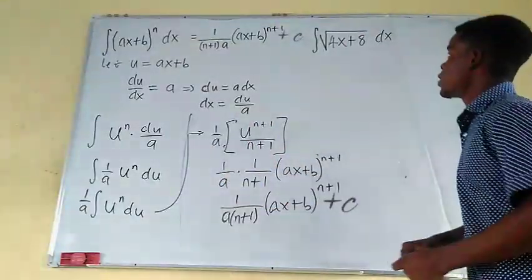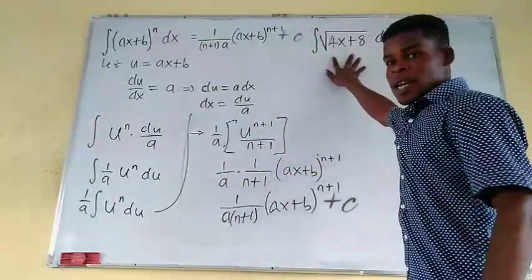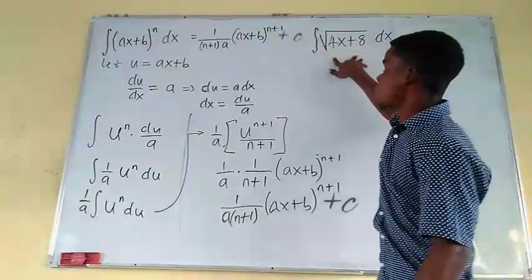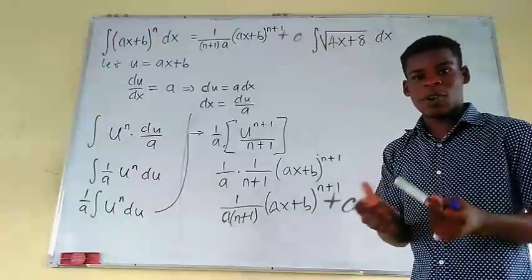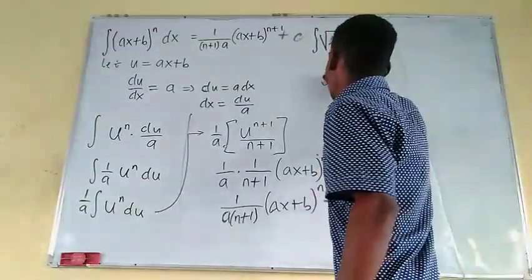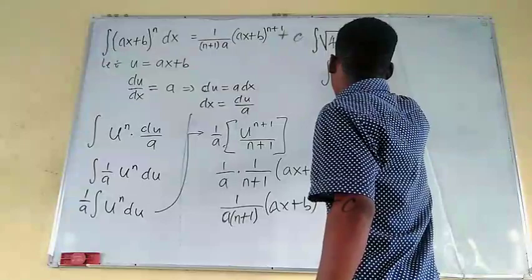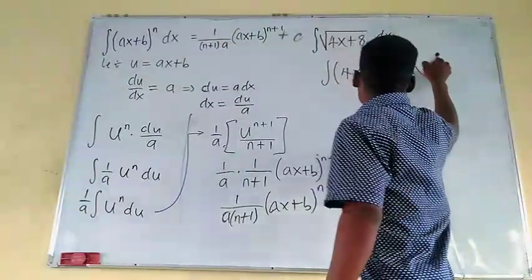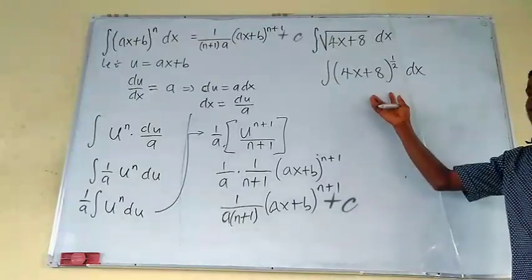Okay, so let's quickly apply it right here. Now, I'm going to rewrite this as a power function. You know, here, you just have square root. What is the power? The power is 1 over 2, right? So we have integral of 4X plus 8 raised to the power of 1 over 2, DX. Like this.